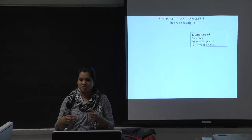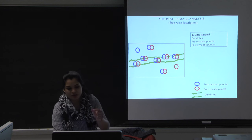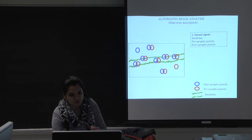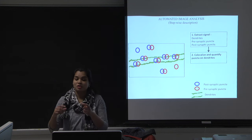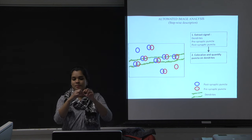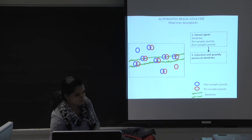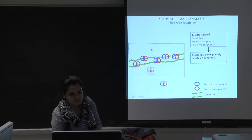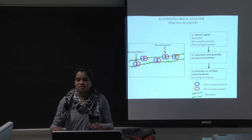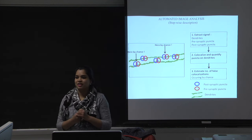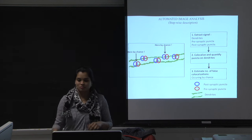First, input the original 12-bit image and extract the signal. I'm showing a cartoon where I extract the signals: blue is post-synaptic puncta, red is pre-synaptic puncta, and green is dendrites. Second step: co-localize and quantify only those puncta on the dendrites, because of the non-specific staining issue, so structures outside the dendrites fall out. Lastly, some co-localizations may happen by random chance, so I wanted to estimate how many occur by chance — and this is where I made use of spatial correlation.